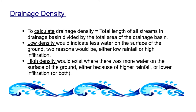The drainage density. I'm almost sure that you will never be asked to actually calculate the drainage density of an area, but it is important that you know how to do it. You almost have to learn this as if it were a definition. To calculate the drainage density, it's the total length of all streams in the drainage basin divided by the total area of the drainage basin, giving us either a low density or a high density.